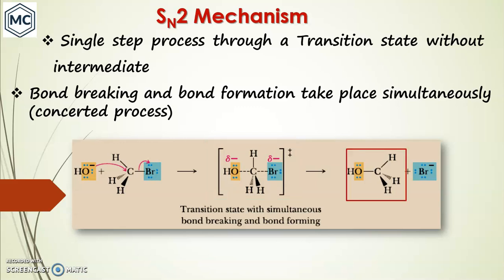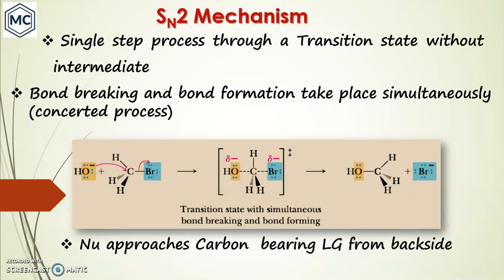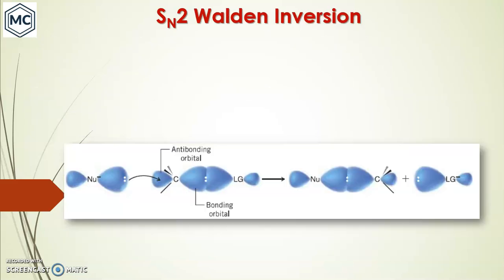The product is then obtained. An important point: the hydroxyl group attacks from the back side. It cannot approach from the front side because bromine is electronegative — the leaving group repels the nucleophile — so there is only room for back-side attack. In the transition state, all three hydrogens are in the same plane; this is a penta-coordinated carbon, and the C–Br bond to the leaving group is not yet completely broken.